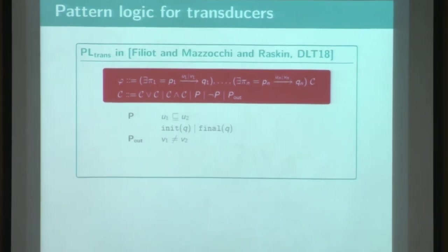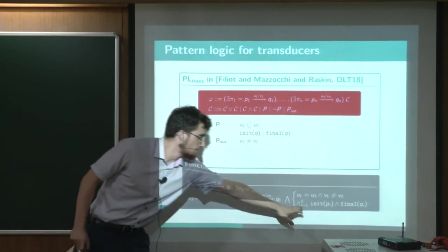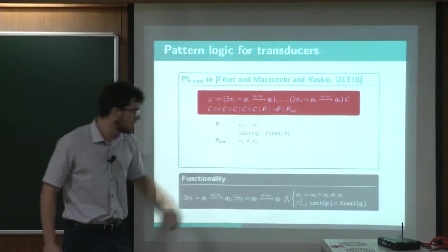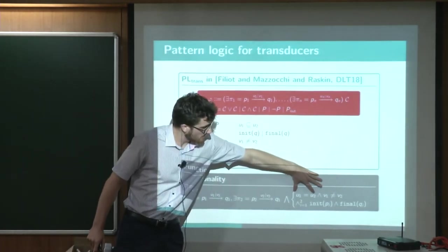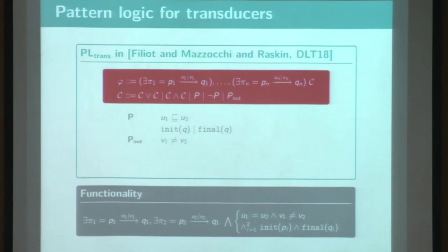And you can try to think how to encode the equivalents in this formalism. So does someone have any hope? No? Okay. In fact, this equivalence problem reduced to the functionality of this disjoint union of our two transducers. And this can be expressed with the following formula, which says that there exist two paths. Both are accepting.